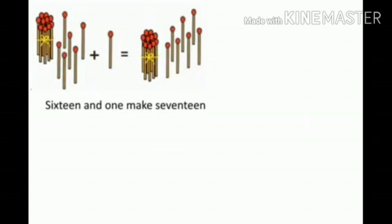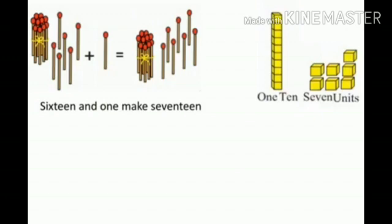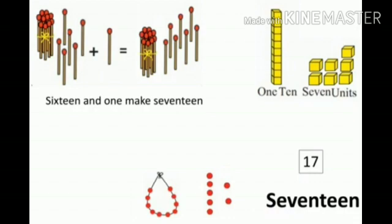Here, 1 bunch of math sticks is there — that is, 10 math sticks. With 6 math sticks, 16 plus 1 math stick equals 17 math sticks. 16 and 1 make 17. The 10-group of blocks is 1 ten and 7 blocks is 7 units. 10 bits of 1 ten and 7 bits is 7 units. That is, 17, and the spelling of 17 is S-E-V-E-N-T-E-E-N.